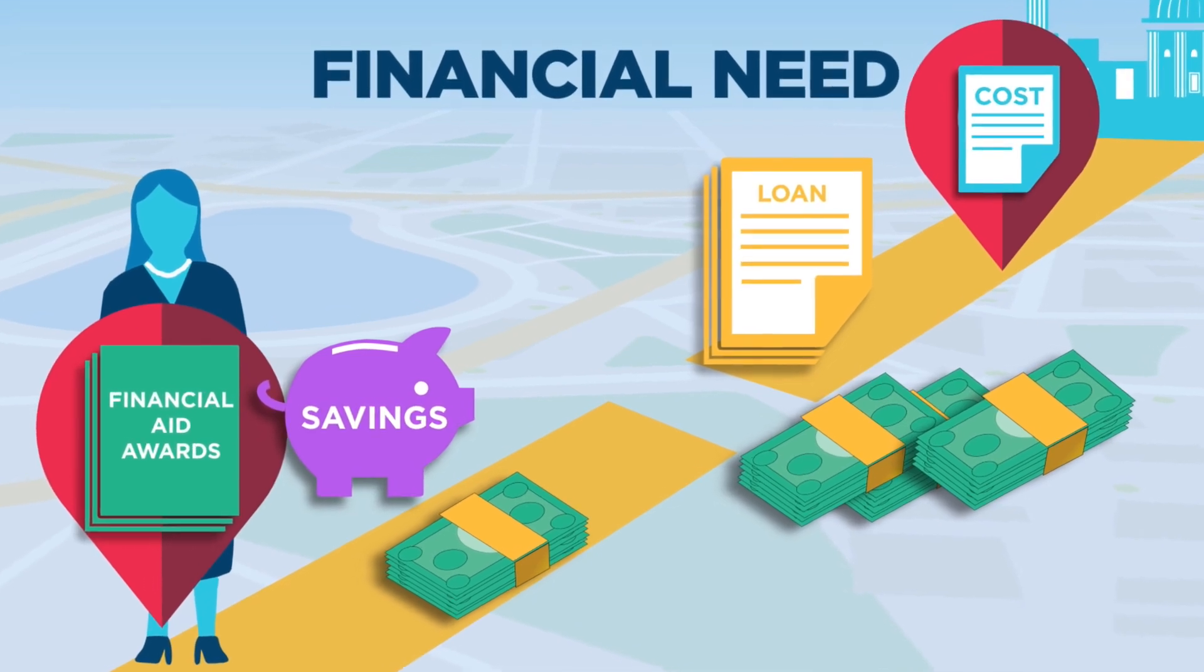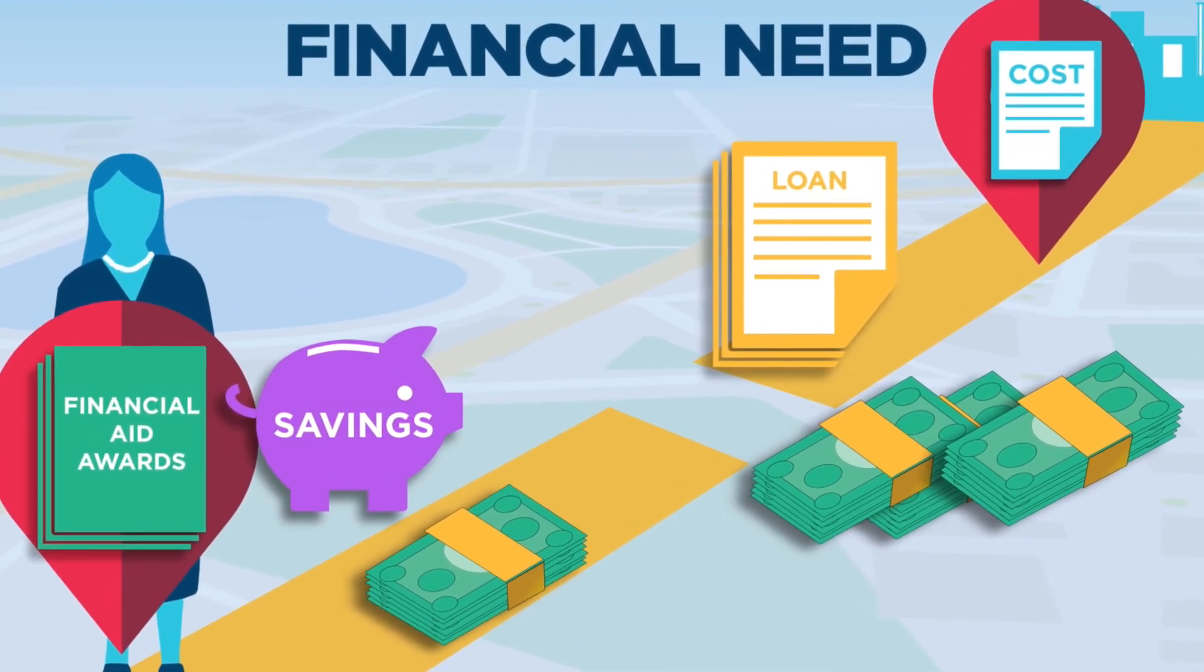CSS, FAFSA, COA, EFC - if all these acronyms make you feel like you need an advanced degree in cryptology to understand them, stick around.